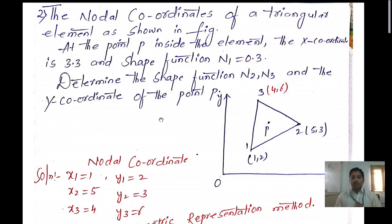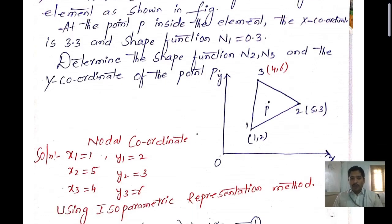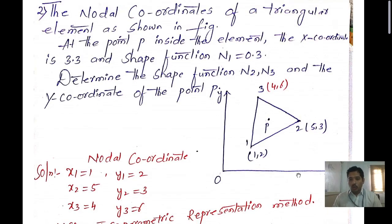So from this problem we understand what we need to find out. First, we need to find the value of y. We also need to find the shape functions n2 and n3. This triangular element lies in two coordinates — the x coordinate as well as the y coordinate — and has three nodes: the first node, second node, and third node.